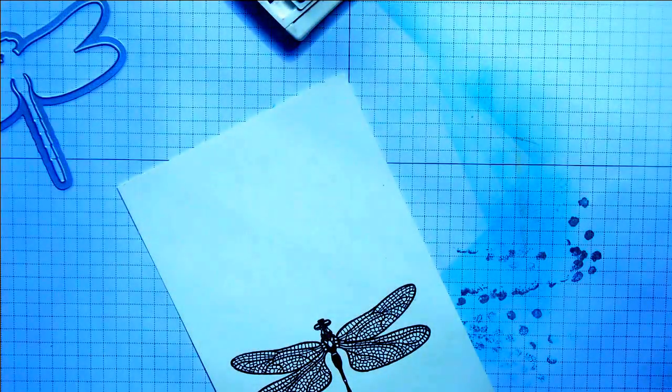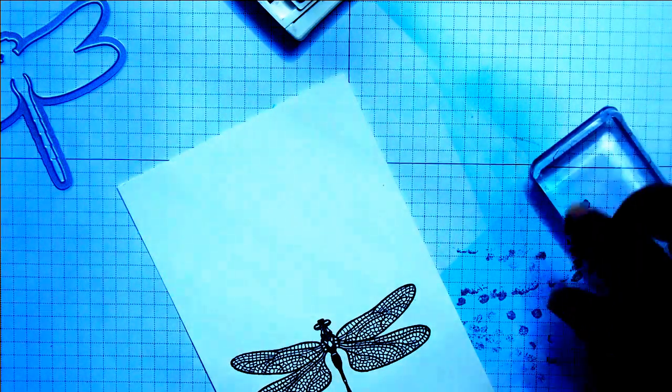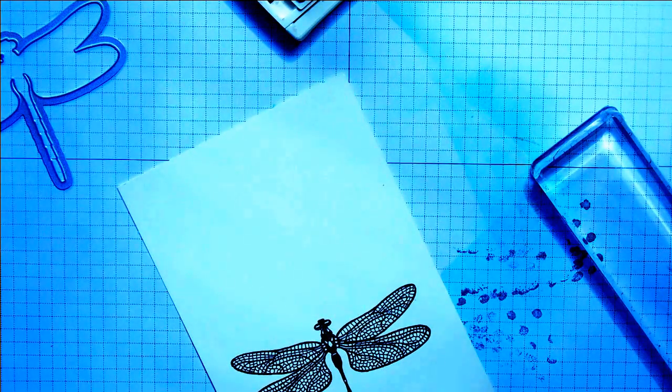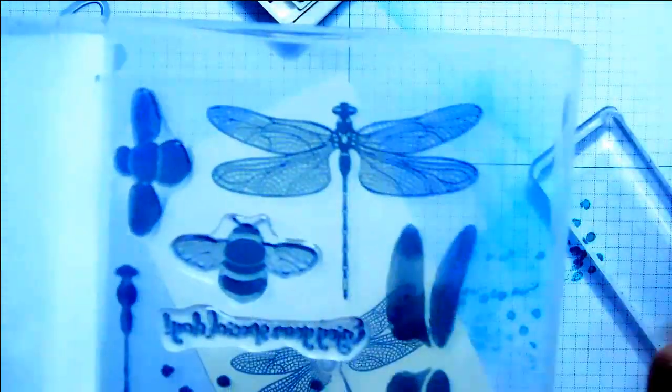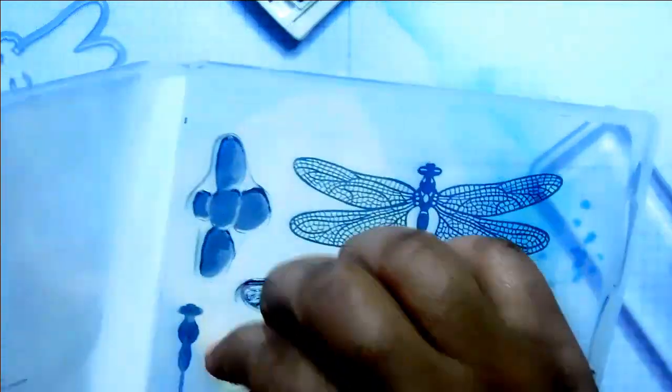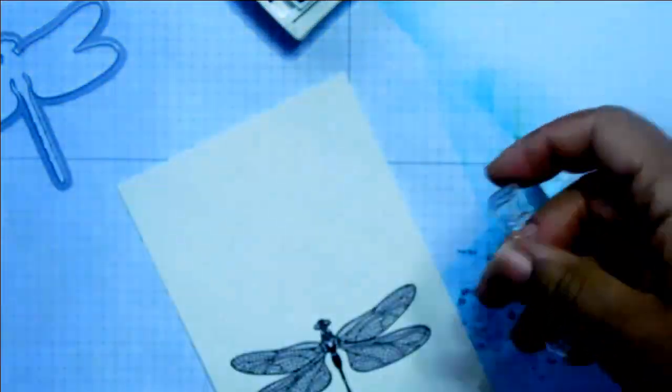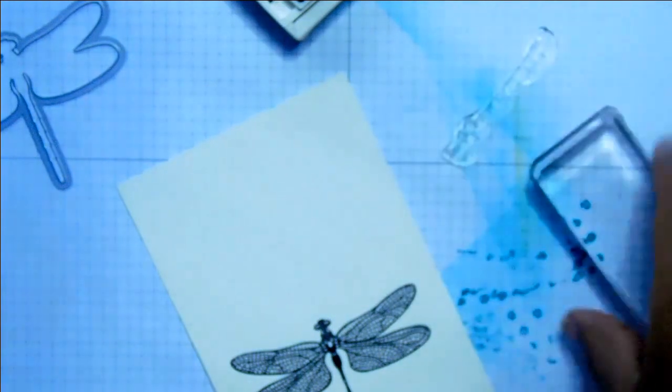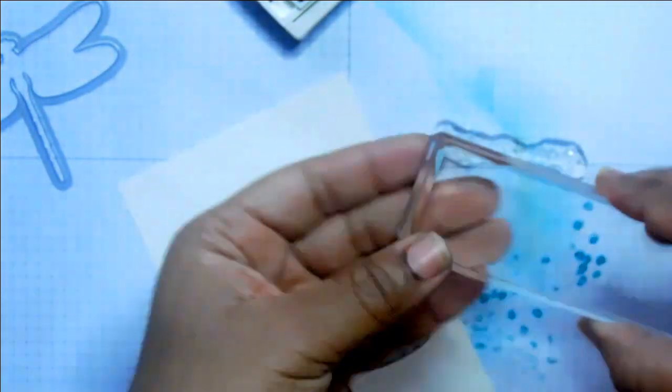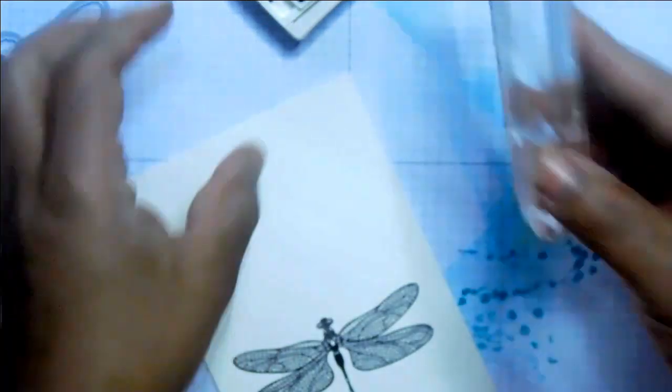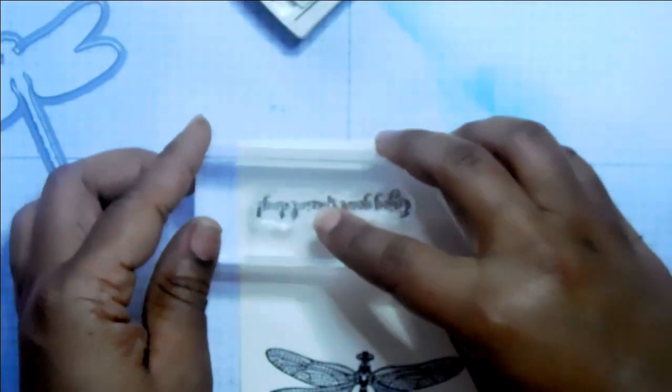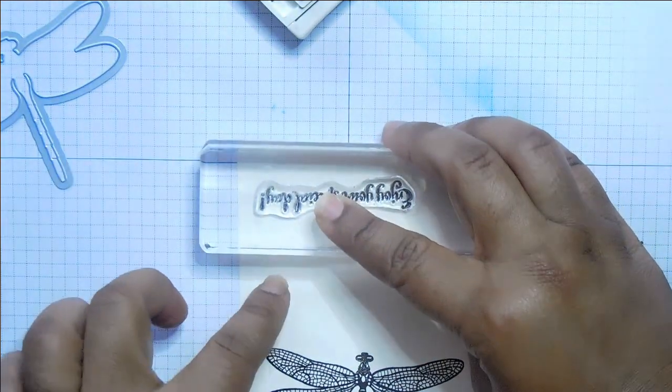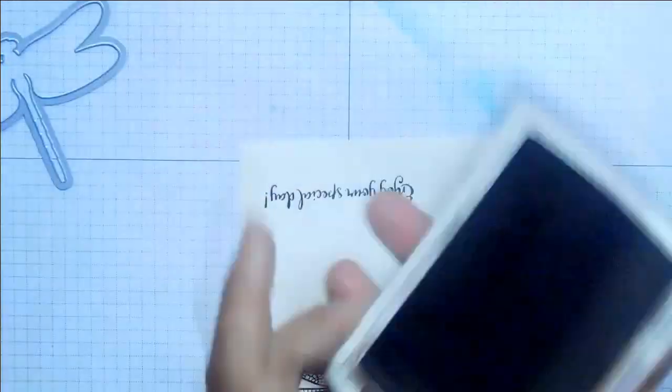And then while I've got that ink out, I'm going to take the sentiment from that stamp. And I'm going to use Enjoy your special day. And just drop it down on the work surface to make sure that it is straight. And then pick it up. And just stamp that at the other end. And we'll just cut that out.